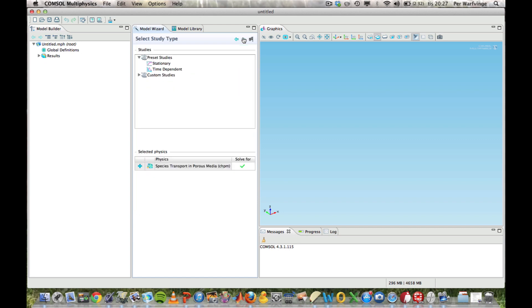So, the second thing we need to do, we have to decide, should we have stationary or should we have time-dependent? And since we're interested in how the concentration varies both with space and with time, we need to have it time-dependent. That's the third thing, and we're finished.